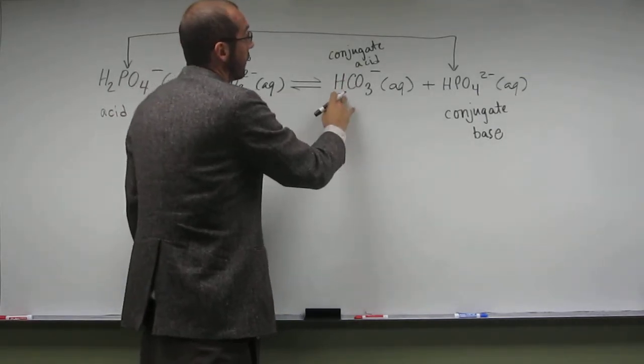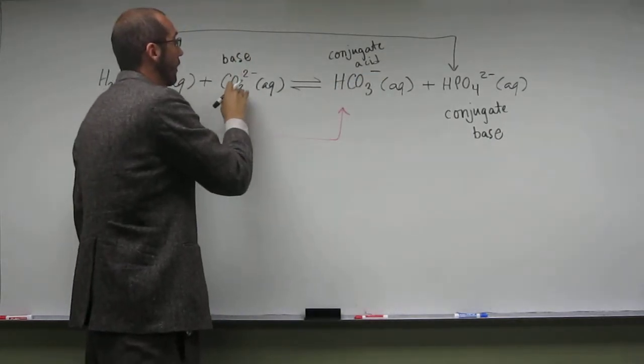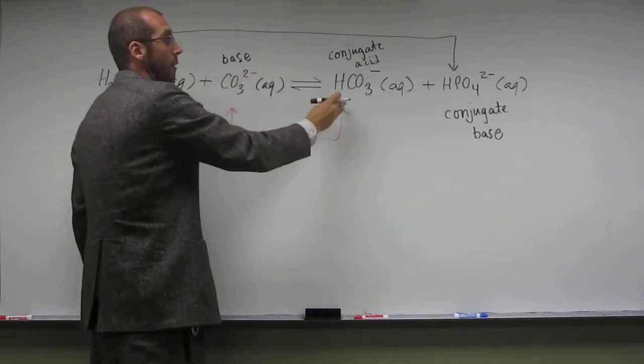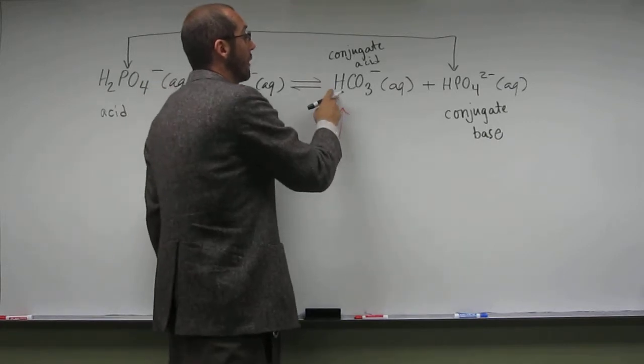Well, if I look at this I have HCO3 minus and here I have CO3 2 minus. Or the bicarb relative to the carbonate ion. So what has happened here?